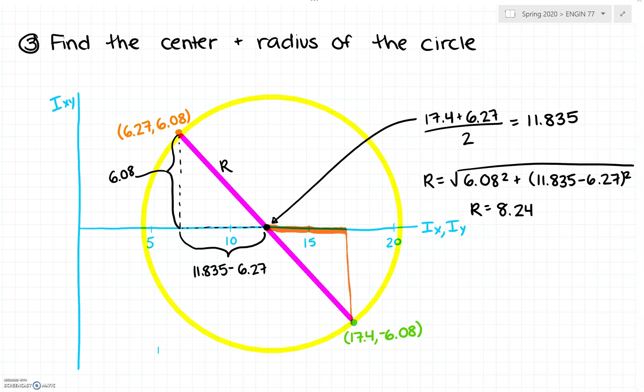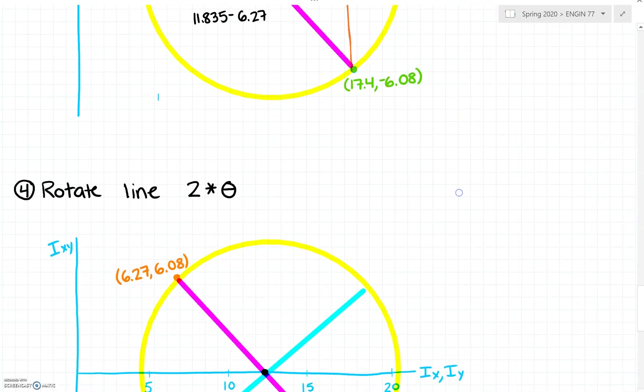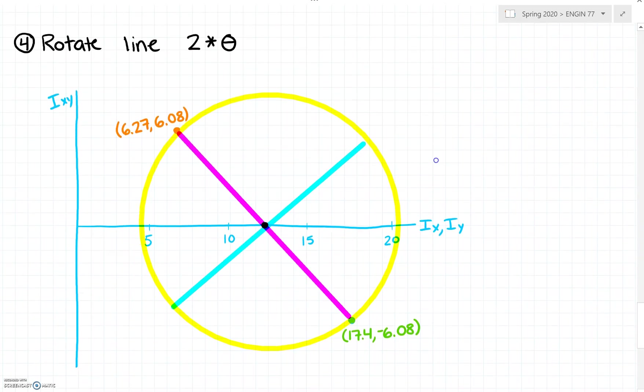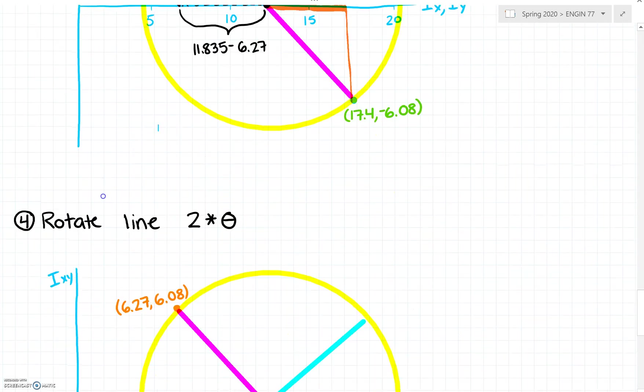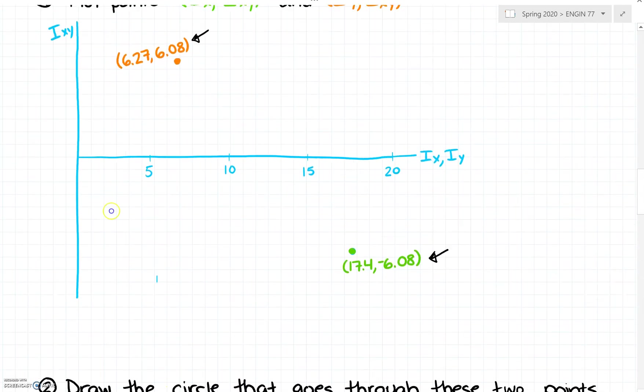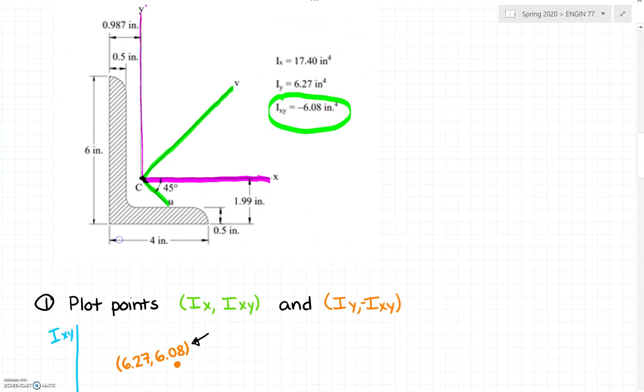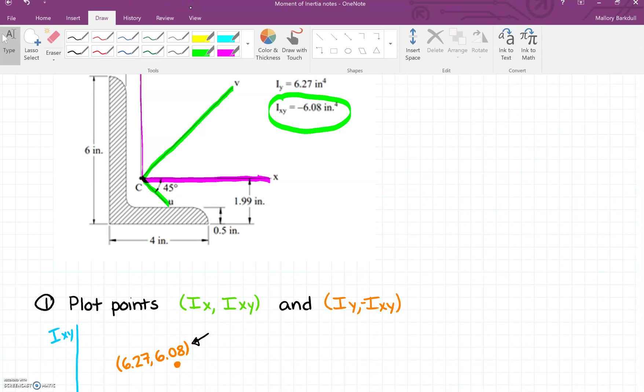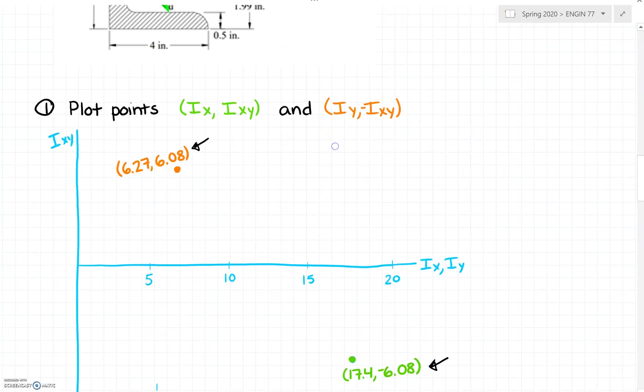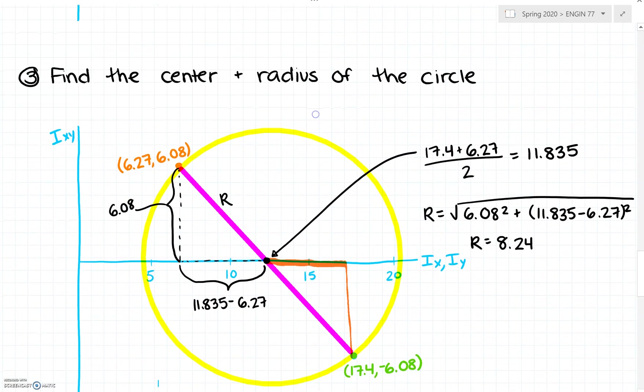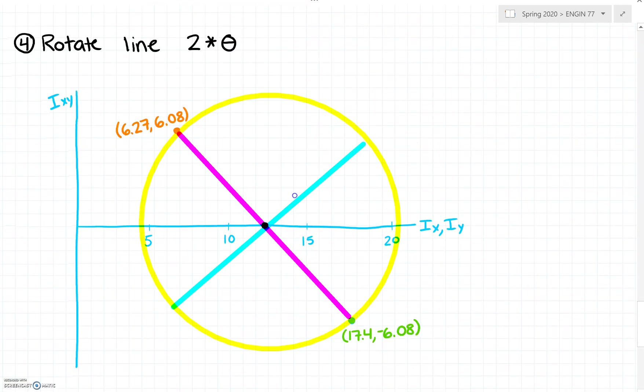Once we've found the center and the radius of our circle, we're going to rotate our line 2 times theta. Going back to the example, our x axis has been rotated clockwise 45 degrees. When we're in Mohr's circle we're always going to multiply our angles by 2.